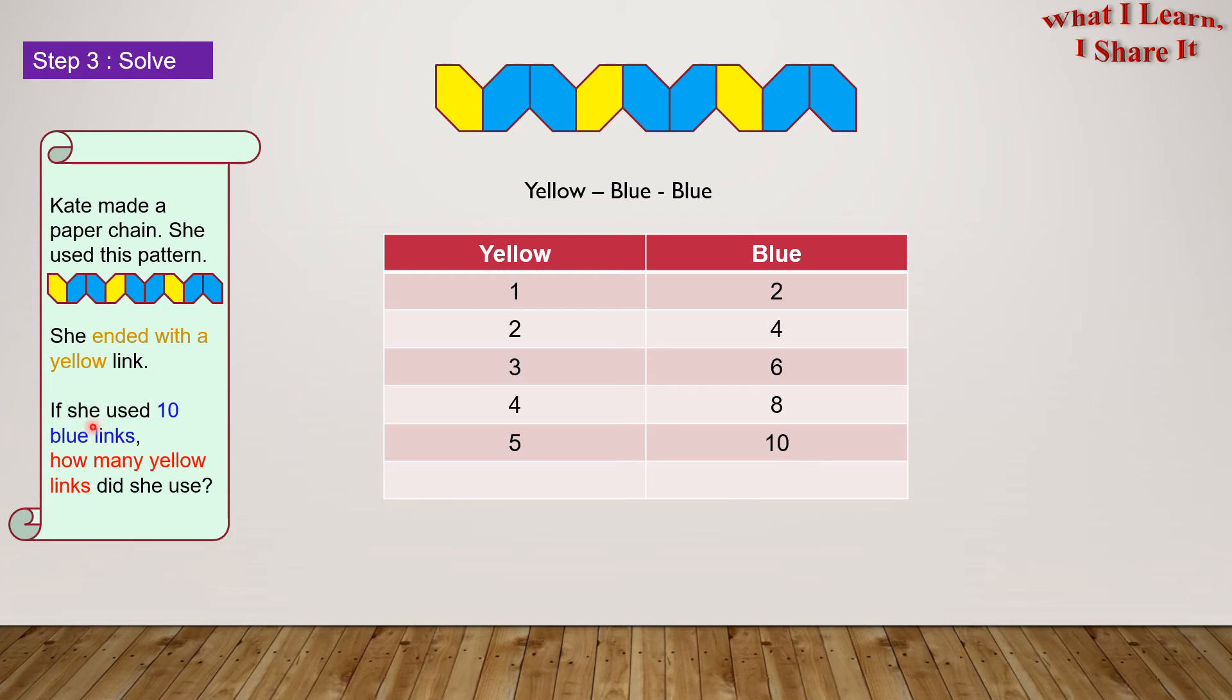So she used ten blue links. This part of our pattern is done. But are we completely done yet? No, we are not. She ended with a yellow link. So she used six yellow links. Kate used six yellow links. Now let's check our answer.